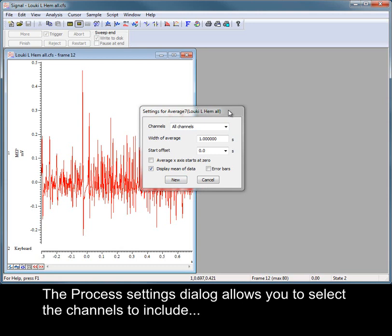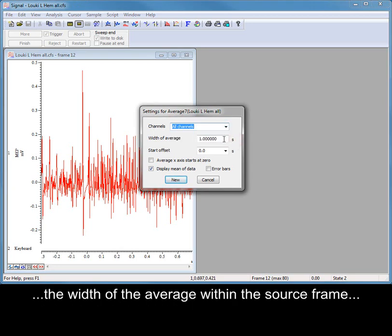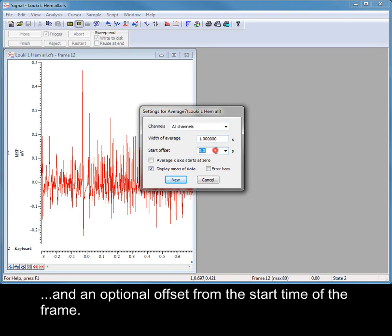The Process Settings dialog allows you to select the channels to include, the width of the average within the source frame, and an optional offset from the start time of the frame.